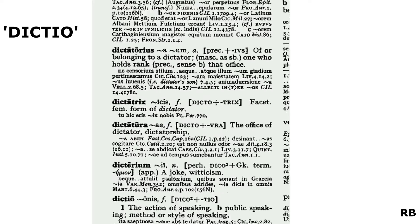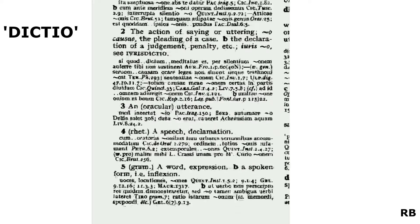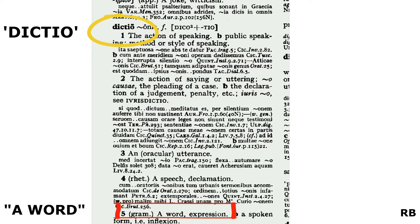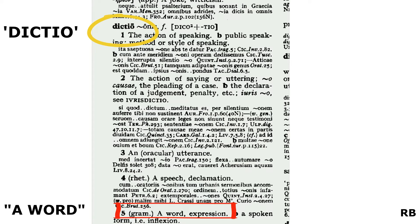The Oxford Latin Dictionary describes 'dictio' as a word, but if you have a look at it again, you'd find there are also other meanings mentioned in the dictionary. What you'd see is that all the other meanings refer to words in usage. It basically implies that a dictionary is a collection of words and expressions where each entry refers to its use.